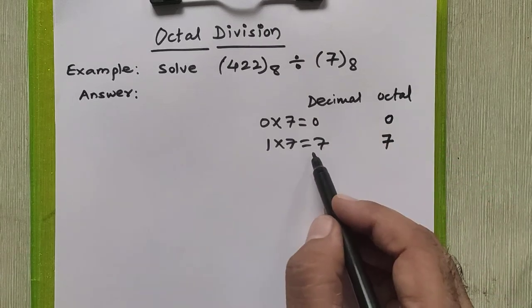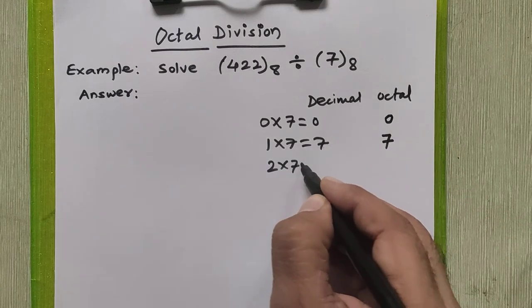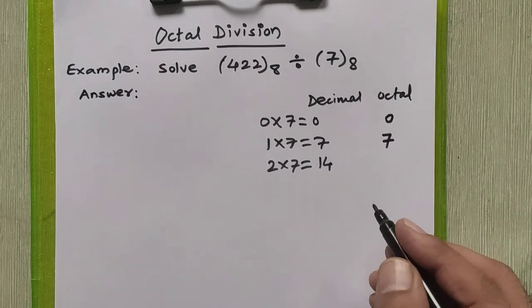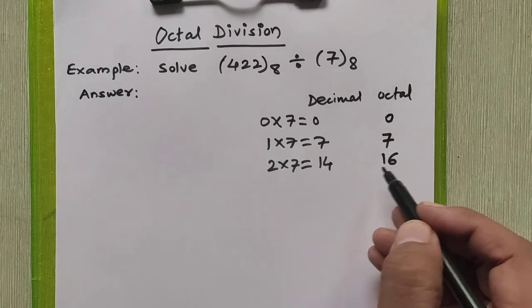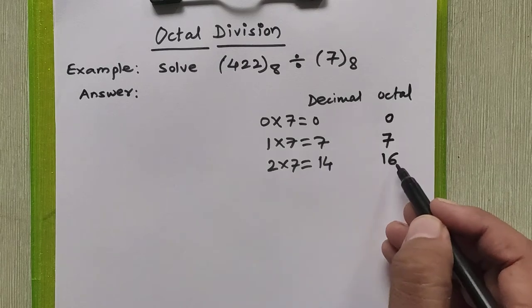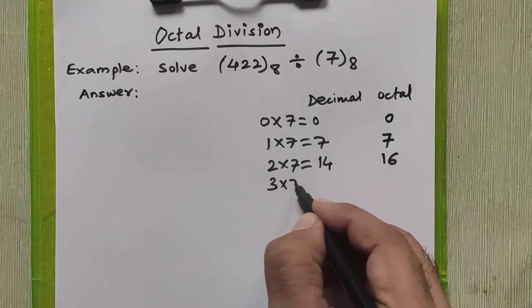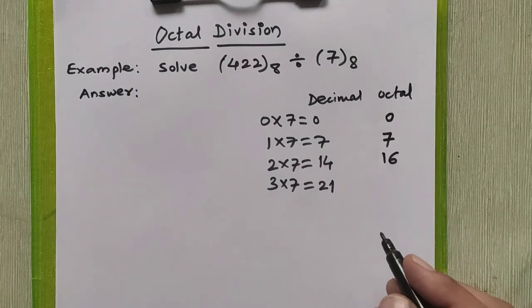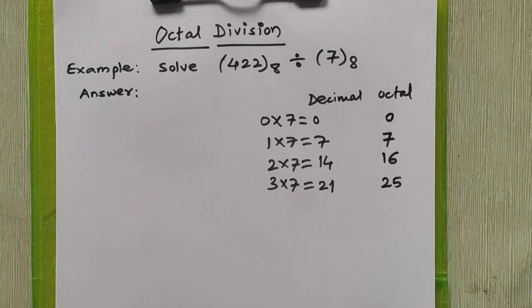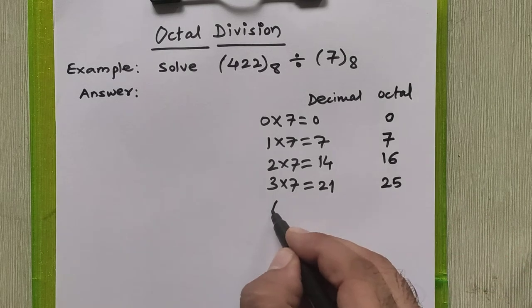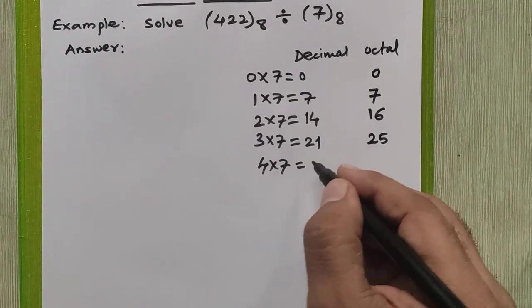2 into 7 is 14 in decimal, but in octal number system it is 16. When you convert decimal to octal, 14 is nothing but 16 in octal. 3 into 7 is 21 in decimal, whereas in octal it is 25.